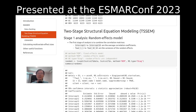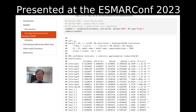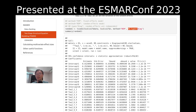The first part is to conduct a two-stage structural equation model. We are going to use a random effects model, and the syntax is like this. We include the data, the sample size, and then the method. We specify the random effects model and assume the random effects are independent, because we may not have enough data to estimate the full variance-covariance matrix.